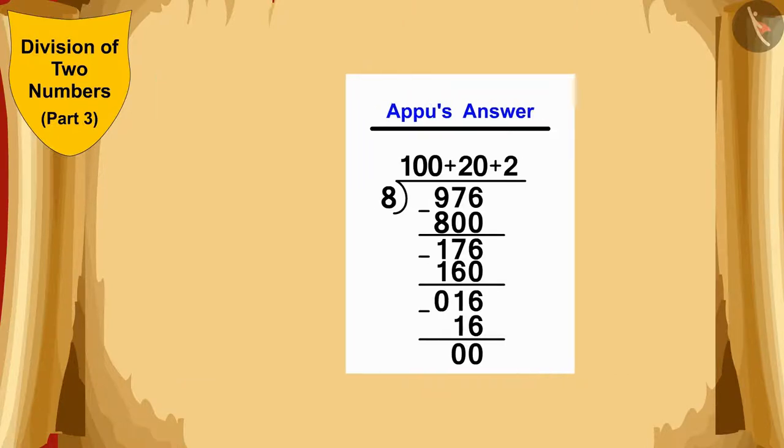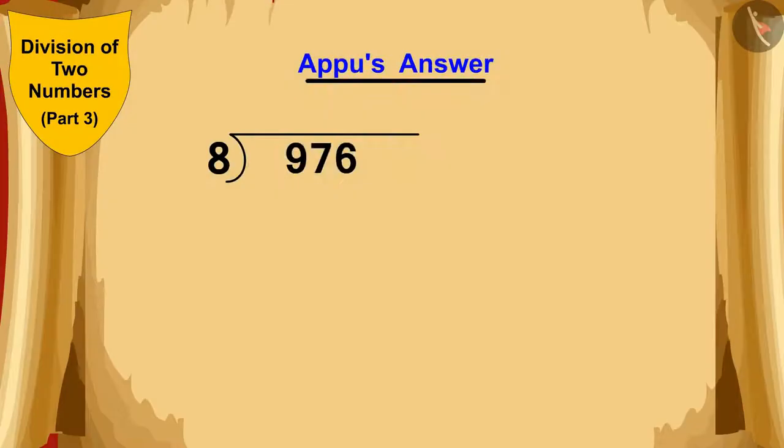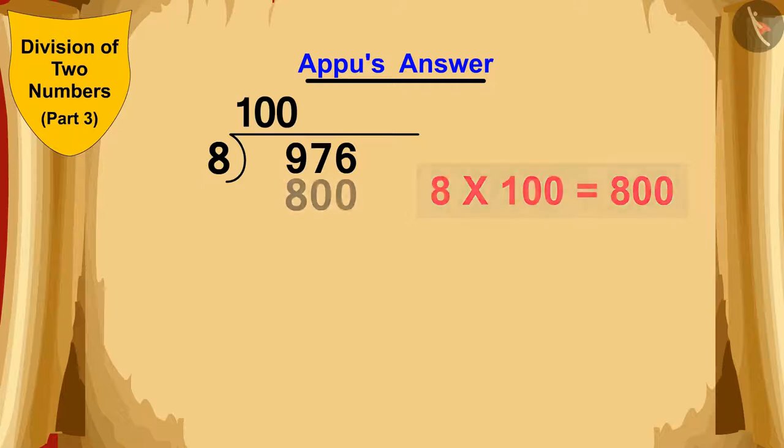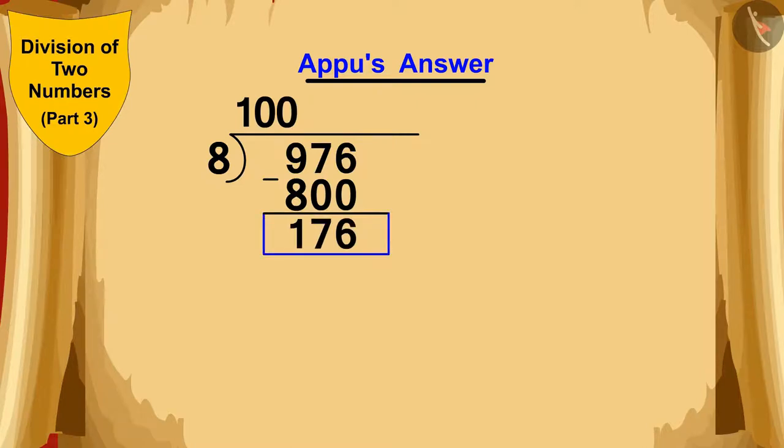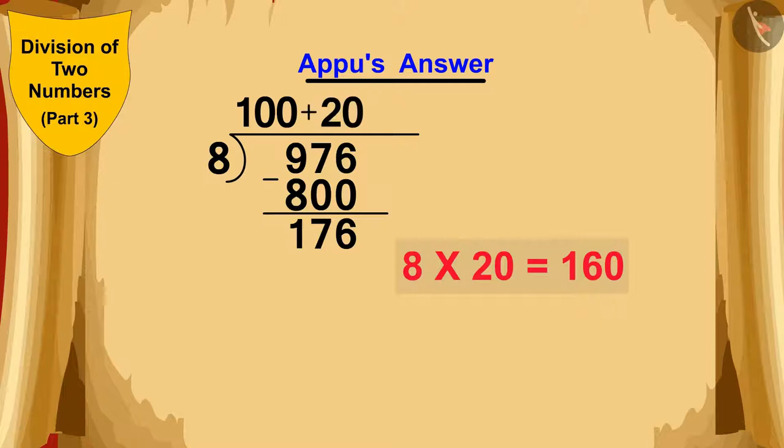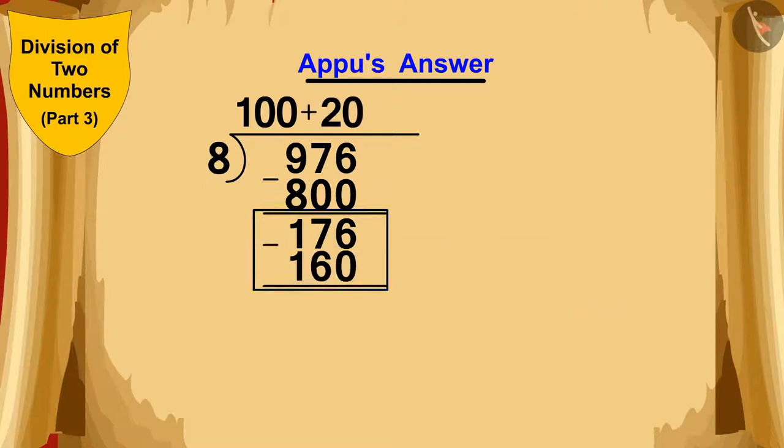First, we will see the division that Appu did. Appu first saw that 8 times 100 is 800. So, he wrote 100 on the top. And from the 976 below, he subtracted 800 and wrote 176. Now, Appu saw that 8 times 20 is 160. So, he added 20 above, and at the bottom,